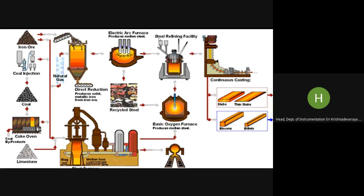We will see what happens in the electric arc furnace, the basic oxygen furnace, and the open hearth furnace — the main steel refining facilities. Refining the steel means removing gases, relieving stresses in the molten metal, and so on. After refining, the metal goes to continuous casting to be made into slabs, thin slabs, blooms, billets, and ingots.